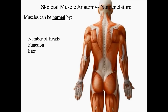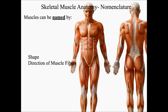An example of muscles named by the number of heads would be the triceps brachii. Muscles named by their function include the extensor muscles on the forearm, such as the extensor carpi radialis, which extends the wrist. A muscle named by its size would be the gluteus maximus — maximus meaning large. Muscles named by shape include the deltoids (delta meaning triangle) and the trapezius, which resembles a trapezoid.